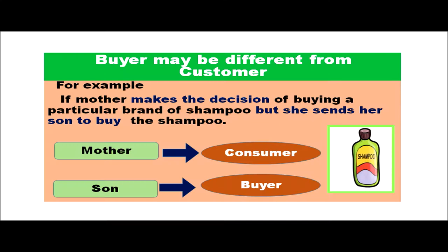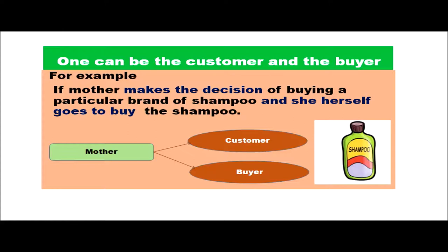A buyer may be different from the customer. For example, if the mother decides on a shampoo brand but sends her son to buy it, the son becomes the buyer. If mother herself goes to buy the shampoo she decided on, she is both the customer and the buyer. So a person can be a customer, buyer, and consumer simultaneously.